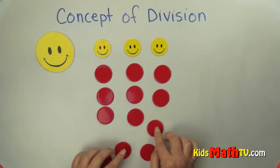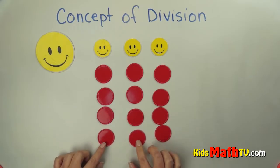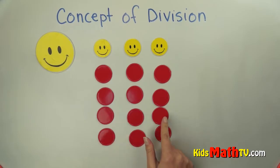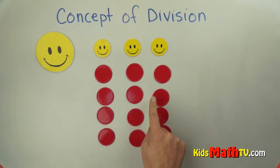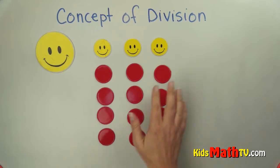So we're giving each brother one candy at a time. So how many candies is this all together? 1, 2, 3, 4, 5, 6, 7, 8, 9, 10, 11, 12 candies.